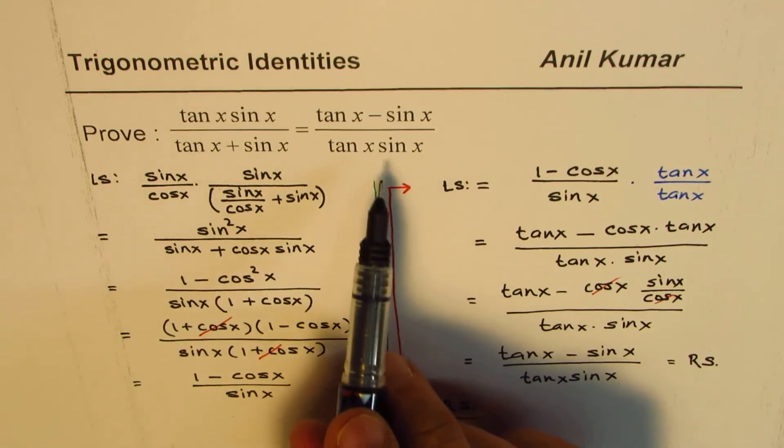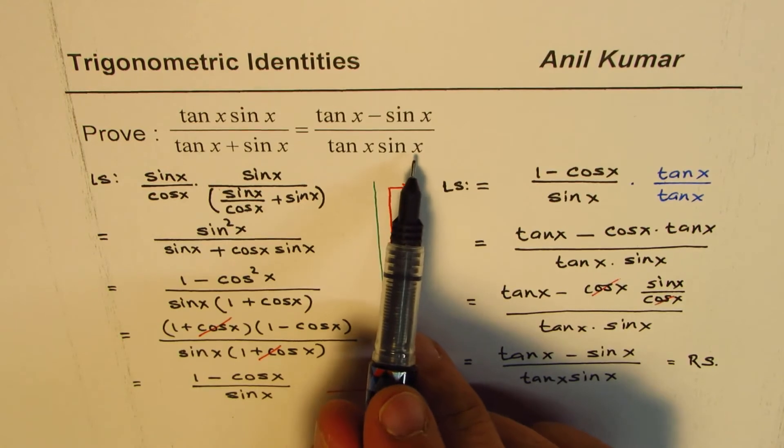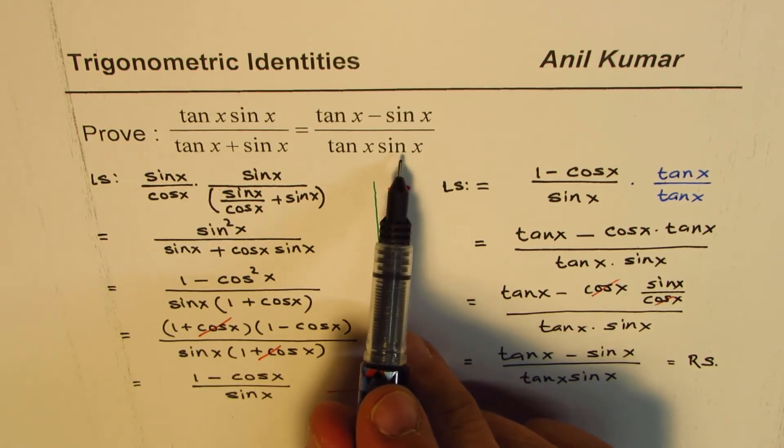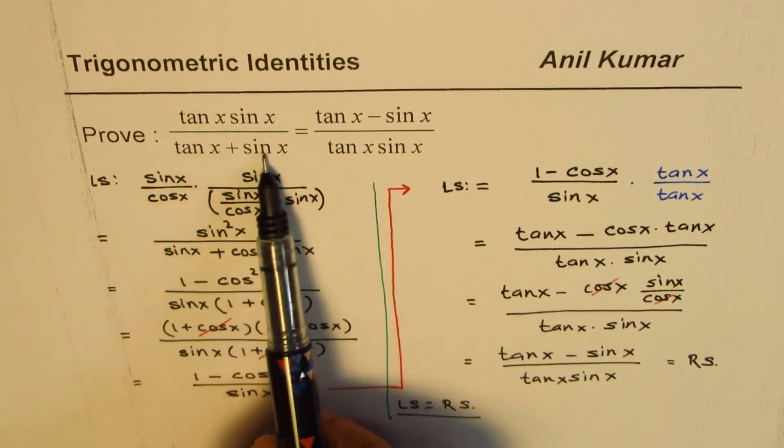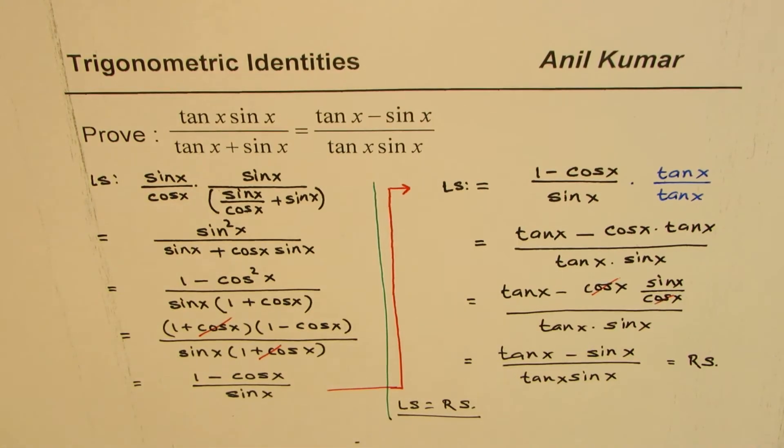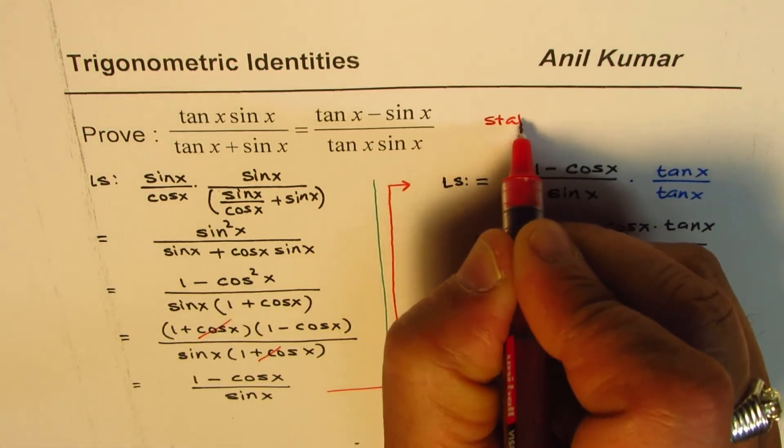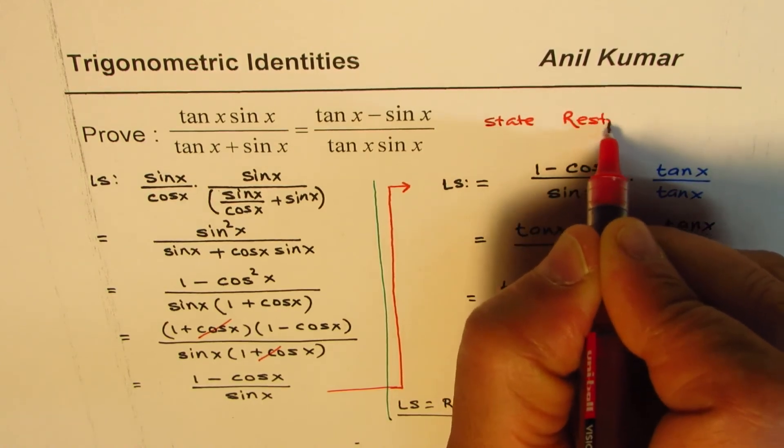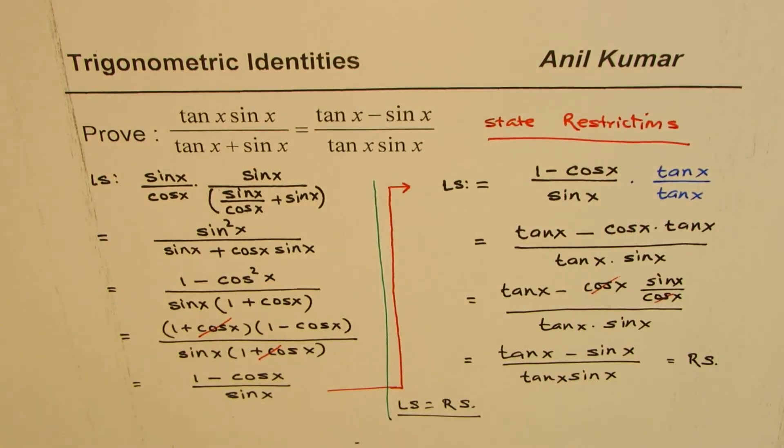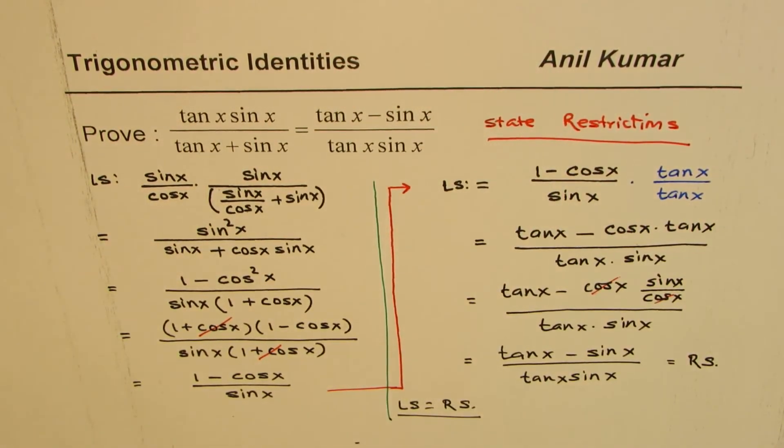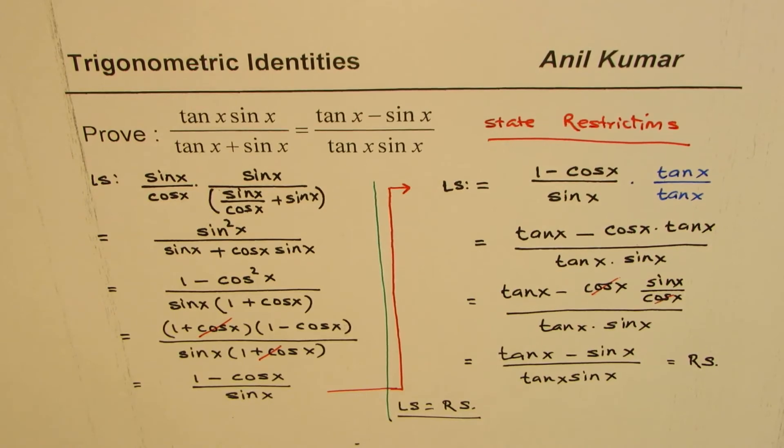At times you may have to write down those restrictions also. In this case, x cannot be zero is one of those restrictions. The other one could be that this cannot be zero. So find your restrictions, let this be a question. That could be a part of the question at times when you prove identities.